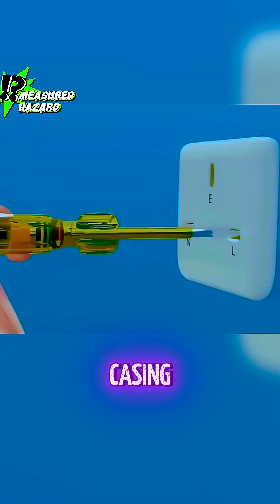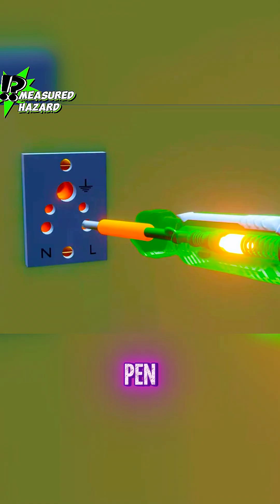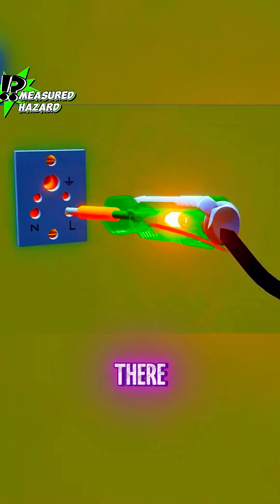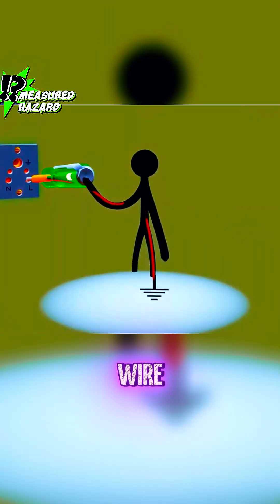When you hold the insulated casing and contact the circuit, the test pen shows no reaction, because there is no voltage between the neutral wire and the ground. Therefore, no current flows through the indicator light.